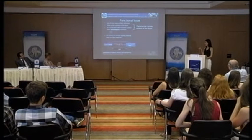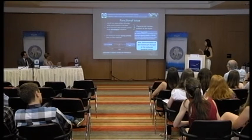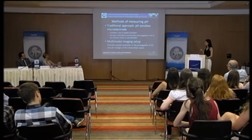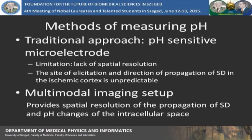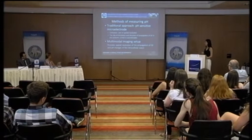It is known that too low pH causes cellular dysfunction, and both stroke and spreading depolarizations in physiological tissue are associated with characteristic lactate acidosis. However, spreading depolarization-related pH changes have not been explored during ischemia. We suggested that the acidosis caused by spreading depolarizations and by ischemia add up together and facilitate a more severe injury of the tissue. Our aim was to determine spreading depolarization-related pH changes in the ischemic cerebral cortex. The traditional approach of pH measurement with a pH-sensitive microelectrode has limitations because spatial resolution is not achievable, which is important since the site of elicitation and directional propagation of spreading depolarizations is unpredictable.